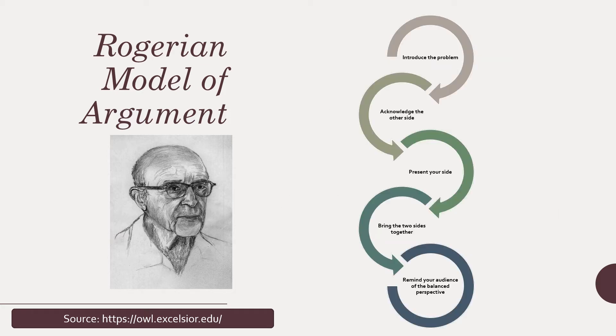Here are some tips that can help you analyze an argument using the Rogerian model. These aspects can help you understand better how to analyze an argument based on this model. The first step is to introduce the problem — what seems to be the problem. The second is to acknowledge the other side.